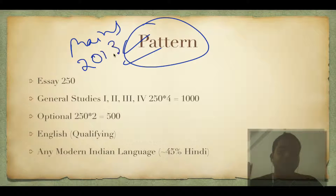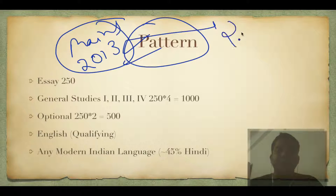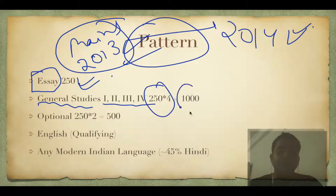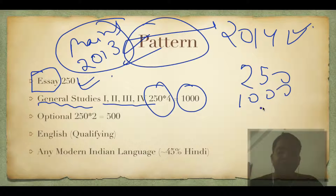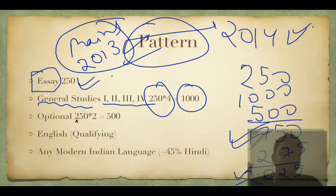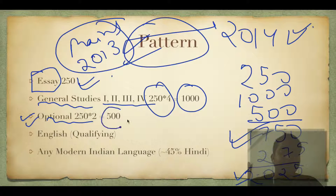This is the pattern of the mains examination, introduced in 2013 for the first time. Essay is the first paper carrying 250 marks, then General Studies - each paper is 250 marks, totaling 1000. So 250 plus 1000, plus optional at 500, gives a total of 1750. Add 275 marks for interview, giving a grand total of 2025 marks.